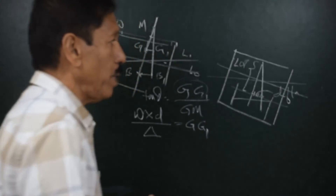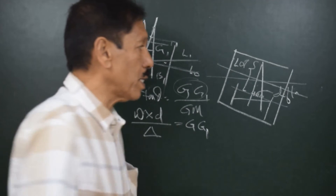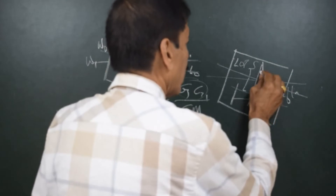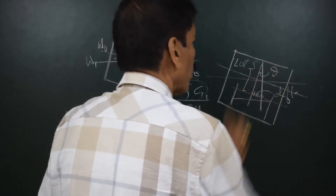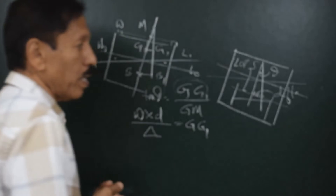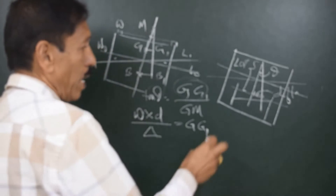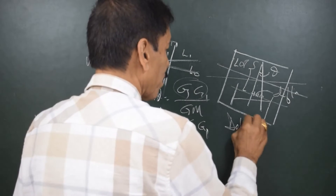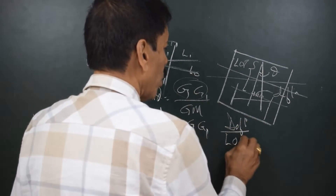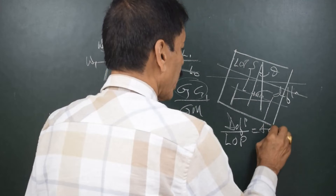So deflection in meters and length of pendulum in meters — the right-angle triangle formed here shows the angle of inclination theta, and we can say that deflection divided by the length of pendulum (LOP) is also equal to tan theta.